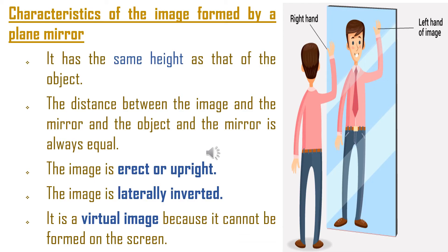Now let us discuss the characteristics of the image formed by the plane mirror. Just stand in front of the mirror and you will observe an image — we call it a virtual image. This is the first point. The second point is that it is erect, or upright, in nature. The third point is that the height of the object is the same as the height of the image. If a small girl stands in front of the mirror, the image is also small; if a taller person stands, the image appears tall. The fourth point is that the distance between the mirror and the object is equal to the distance between the mirror and the image.